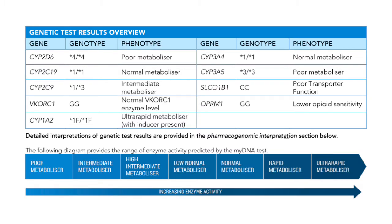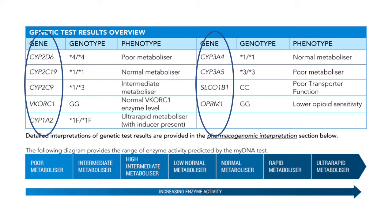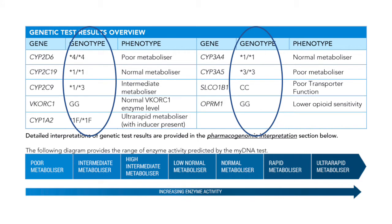The genetic test results overview is the chart with your actual genetic test results in it. The gene column tells us the name of the gene which is being tested for. These genes provide the instructions to your body for making the proteins and enzymes which break down medication. The genotype is the combination of two letters or numbers which represent the variations in the genetic information you get from each of your parents. The letters and numbers are just labels for these variations and do not represent an amount of anything.